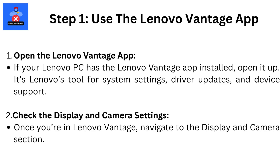Step 1: Use the Lenovo Vantage app. If your Lenovo PC has the Lenovo Vantage app installed, open it up. It's Lenovo's tool for system settings, driver updates, and device support. Once you're in Lenovo Vantage, navigate to the Display and Camera section.